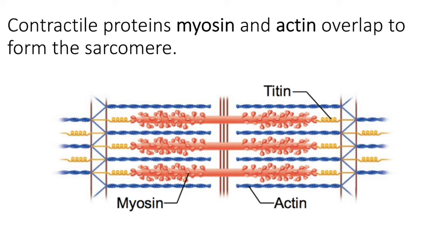Another important protein is called titin. It's the yellow curly looking fibers on the ends of the myosin, which simply anchors myosin to the z-disc. These important components of a muscle cell allow it to contract.